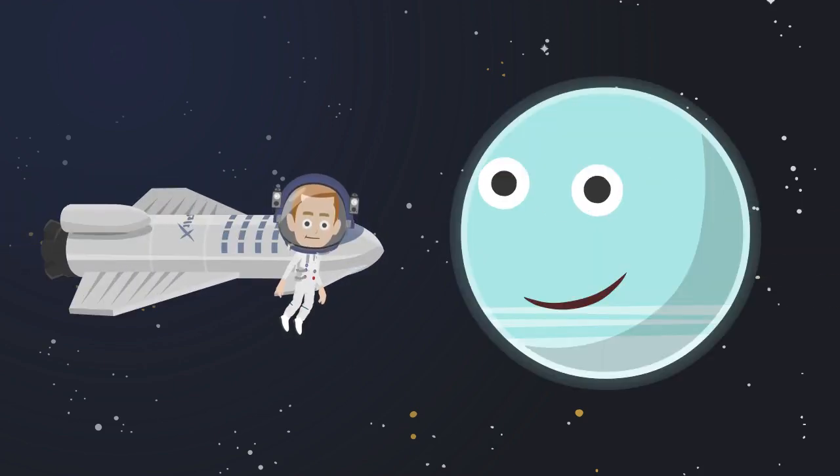This is Uranus. It is the seventh planet from the sun. Uranus is an ice giant. This is the coldest planet in the solar system. This is the only planet in the solar system that spins on its side.